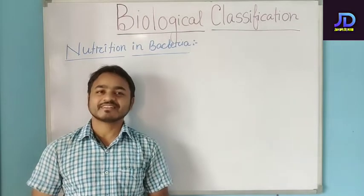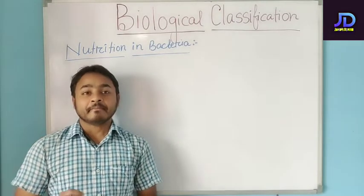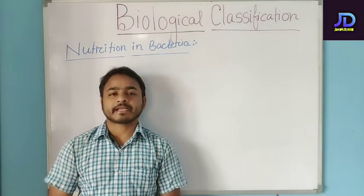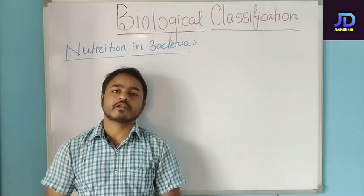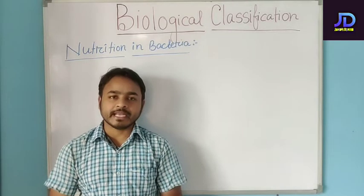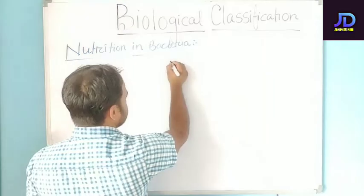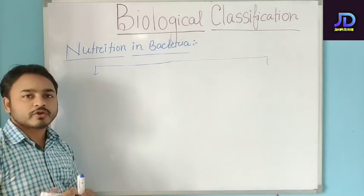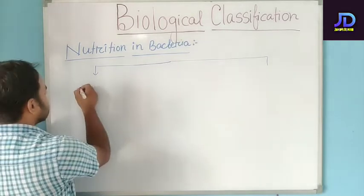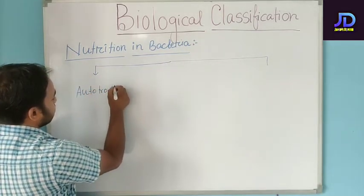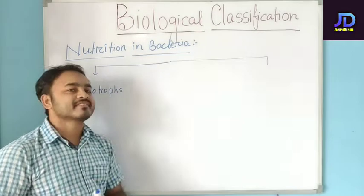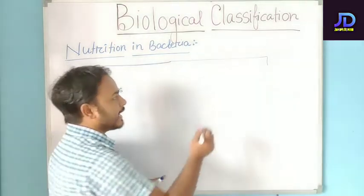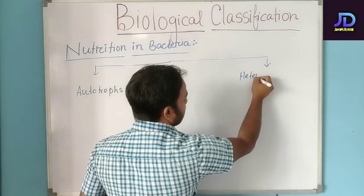Today in this video, we will learn about the nutrition in bacteria. We will classify the bacteria based on the mode of nutrition. If the bacteria can produce their own food or synthesize their own food, then those bacteria are called autotrophs. If the bacteria cannot synthesize their own food but depend on other organisms for their food, they are called heterotrophs.